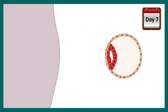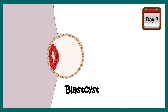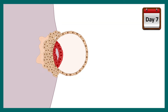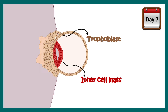At around day 7, the blastocyst slowly moves towards the uterine cavity and ultimately attaches to the uterine wall. At this point, the blastocyst has two different cellular organizations. The outer layer is known as the trophoblast, and the inner layer is known as the embryoblast, also called the inner cell mass. The cells of the inner cell mass are pluripotent stem cells, meaning they can give rise to different cell types, and eventually the inner cell mass will become the embryo.